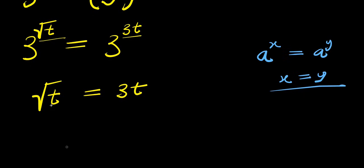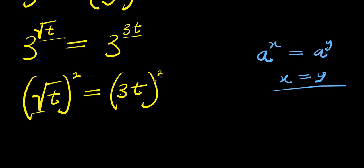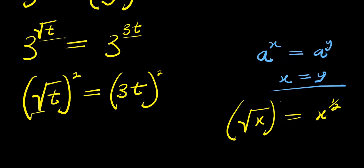So what we are going to do is eliminate this square root by squaring both sides of this equation. Now, if you have square root of x, this is just like having x to the power of 1 over 2. So if you take the square, you multiply 1 over 2 times 2, that is 2 over 2, which cancels out to give 1.